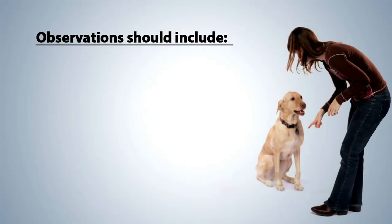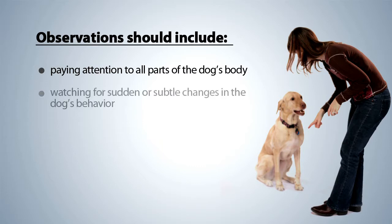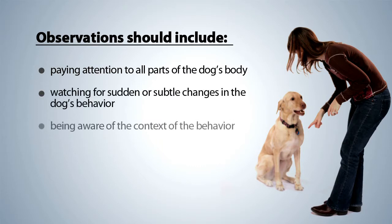To summarize, your observations should include paying attention to all parts of the dog's body, watching for sudden or subtle changes in the dog's behavior, and being aware of the context of the behavior. Because there is so much to watch for, you should plan on spending more than a few seconds observing the dog in a particular situation.